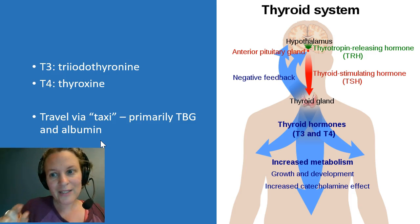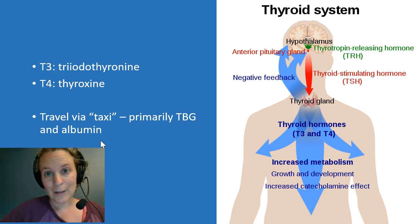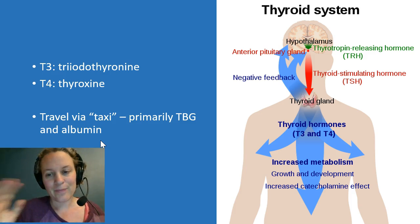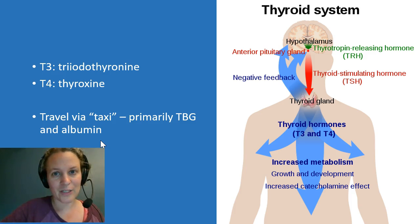So there's a very small fraction of T3 and T4 that will be free, and that is the part that—those are the hormones that can actually cause change in the tissue. And then what's bound up to these proteins is basically a reserve. So as some of that free T3 and T4 gets used up, a little bit more will dissociate from these protein taxis and become free, and so forth.